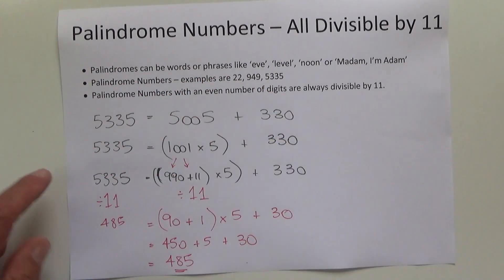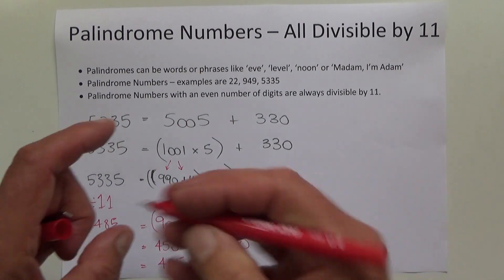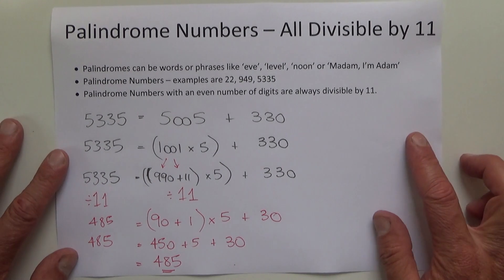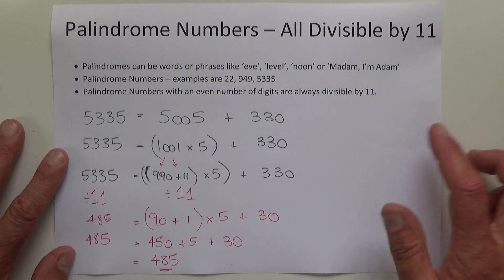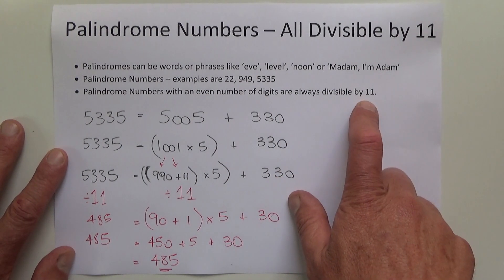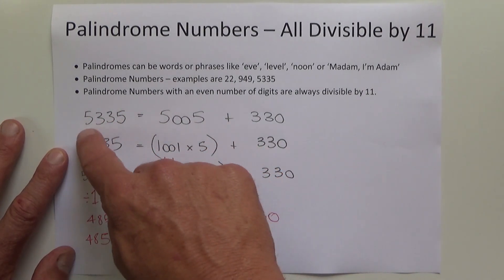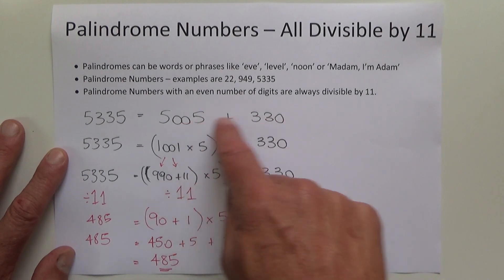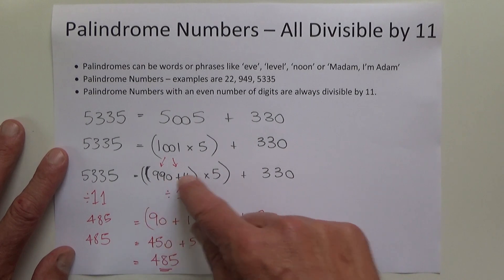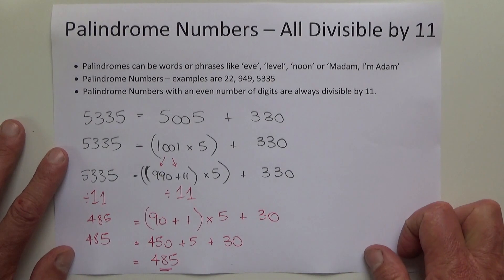So there we go, that's a couple of interesting facts about palindrome numbers. The fact that if it's got an even number of digits, it's always divisible evenly by 11. And also you can take that palindrome number with an even number of digits and break it down into a few component parts, and all those component parts are obviously evenly divided by 11.